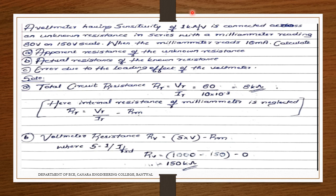Next problem: a voltmeter with sensitivity of 1 kΩ/volt is connected across an unknown resistance in series with a milliammeter reading 80 volts on a 150-volt scale. When the milliammeter reads 10 milliamps, calculate: (a) apparent resistance of the unknown resistance, (b) actual resistance, and (c) error due to loading effect of the voltmeter.